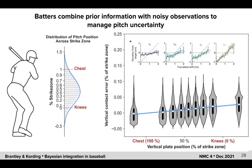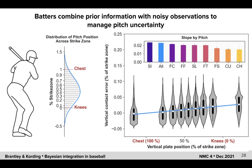Interestingly, our results suggest that the behavior observed in the baseball data is consistent with laboratory experiments, and implies that batters combine prior information with noisy observations to manage pitch uncertainty. Furthermore, when we break this down by pitch type, we find that the slope varies by pitch type, implying that each is accompanied by its own level of uncertainty.